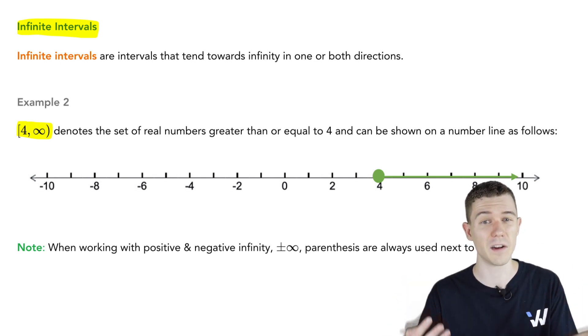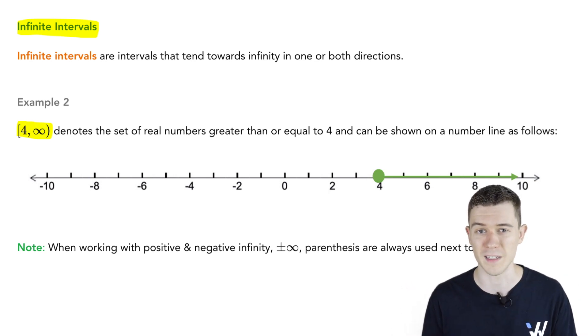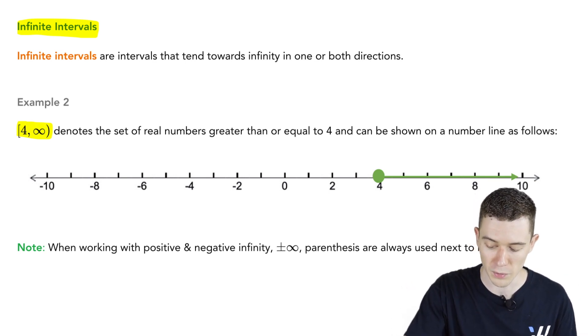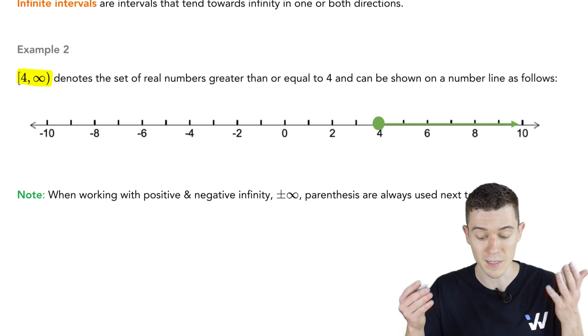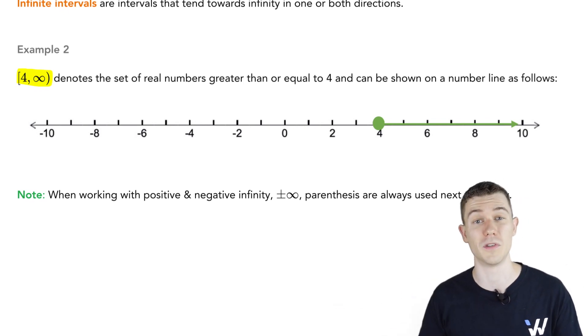Infinity is an idea, not a number. It's always going to get a parenthesis. That's something to remember. Whether you're using minus or plus infinity in interval notation, you'll always put parentheses around infinity. On a number line, it looks like this. We'll see it's filled in at 4, and it goes off forever to the right.